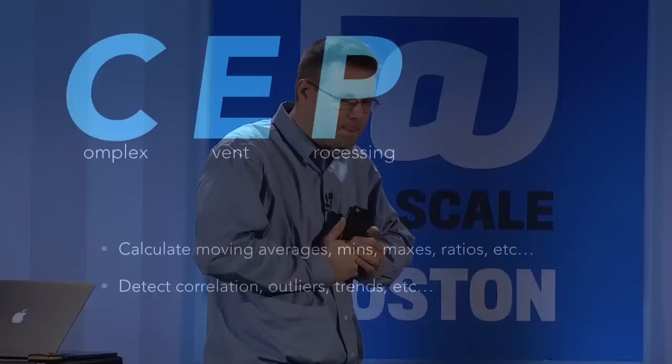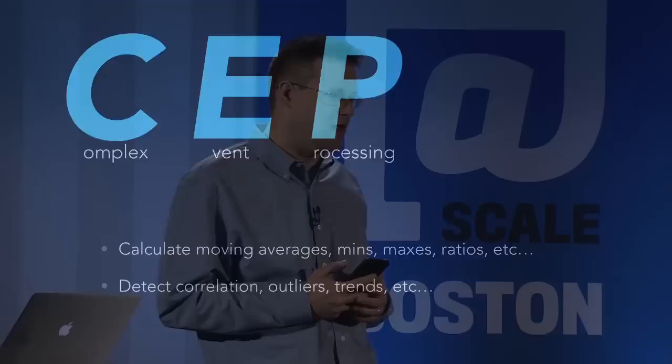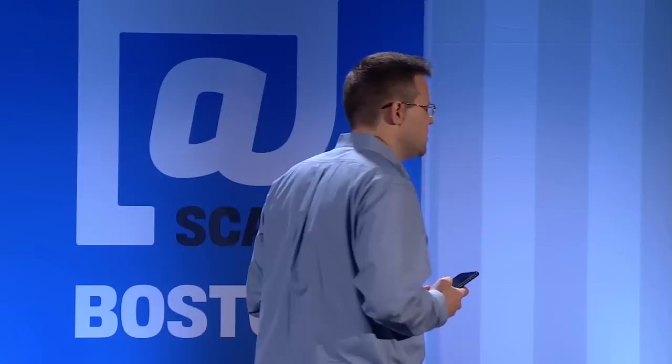I said I would talk about CEP. Complex event processing is where a lot of this streaming stuff started. Basically, take a single box, push a stream of tuples to it, and over windows compute averages, mins, maxes, ratios — detect interesting things. But fault tolerance in CEP systems tends to not be fantastic, and scalability seems to be really tough. They're really getting squeezed.